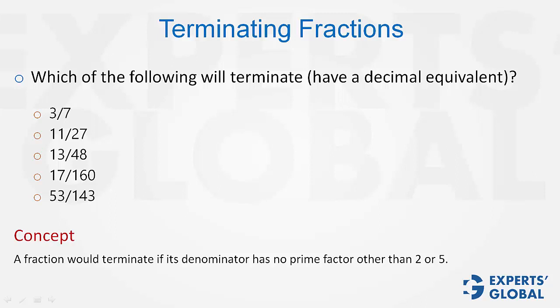The concept is that a fraction would terminate if its denominator has no prime factor other than 2 or 5. So, among these five answer choices, you will see that only option D has a denominator with prime factors only 2 and 5, and therefore, the answer is option D here.